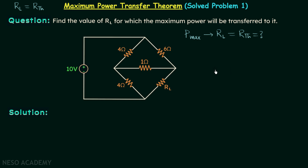We already know how to find out RTH. To find out RTH we need to do two modifications in our network. Modification number one is removing the load resistance and open-circuiting the two terminals. The resistance between the two terminals seen from this side will be our Thevenin's equivalent resistance RTH.